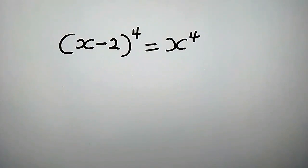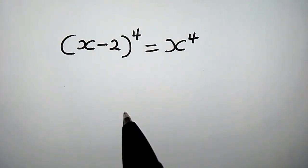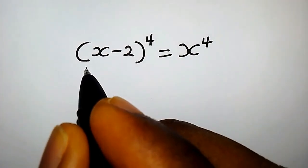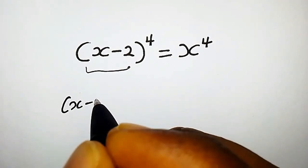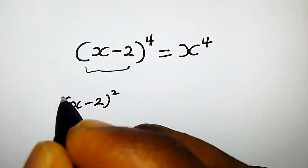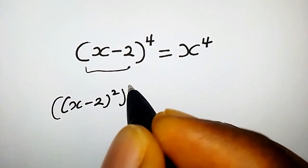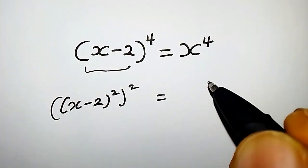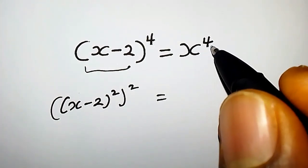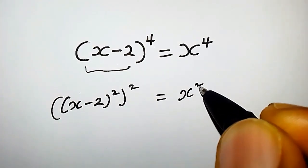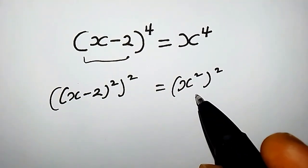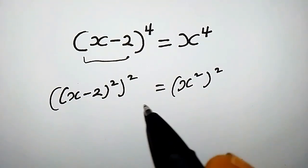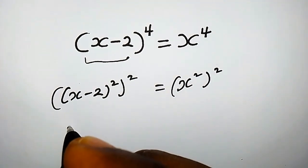Hello, let us discuss this quartic equation — how do we find the value of x? We can rewrite the left-hand side as (x minus 2) squared, times 2. Likewise, x to the power of 4 can be written as x squared, times 2.